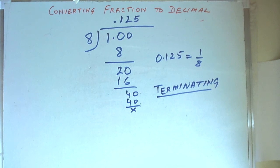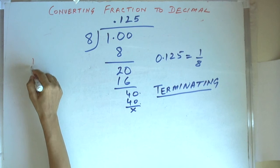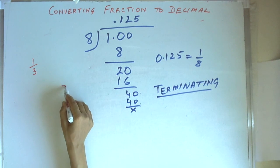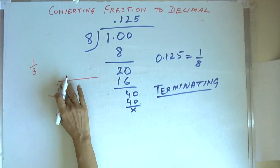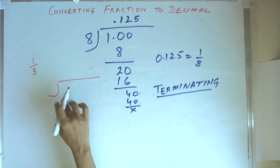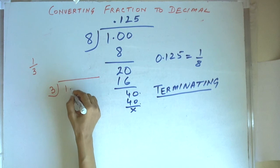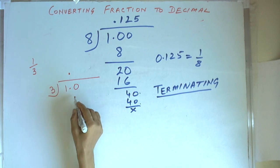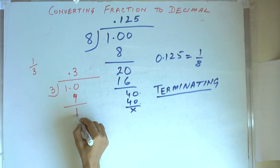Now we take another example and that is 1 by 3. We again try the same thing — we put 1 here and 3 here. Again we put a decimal. 10 divided by 3 gives 3, so this becomes 9 and then we get remainder 1.